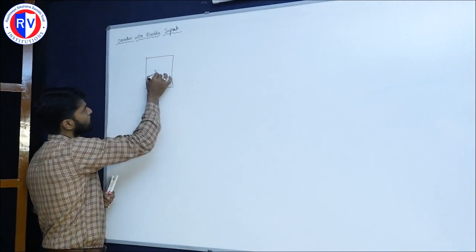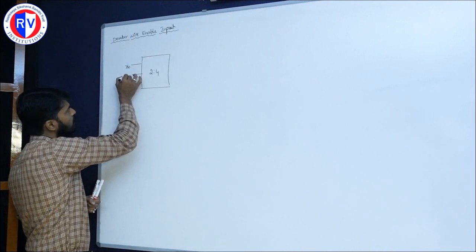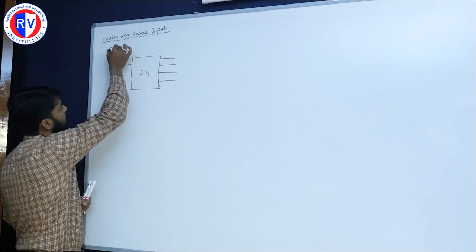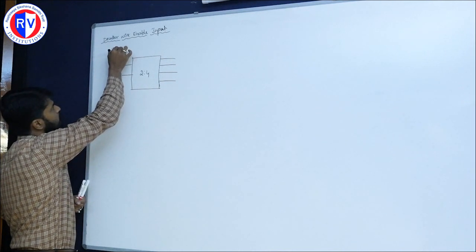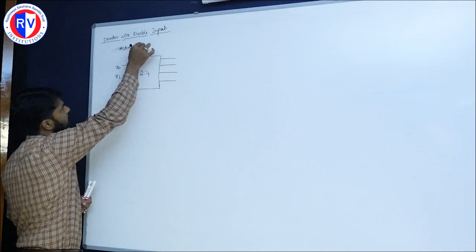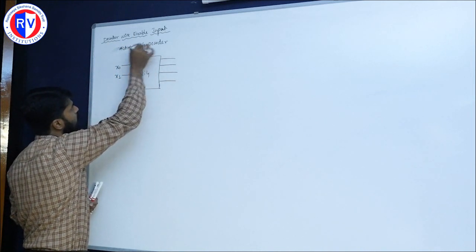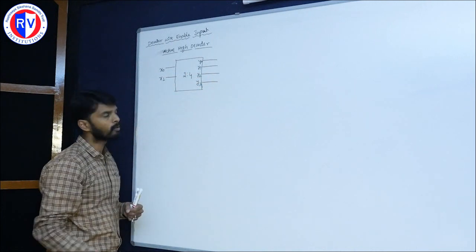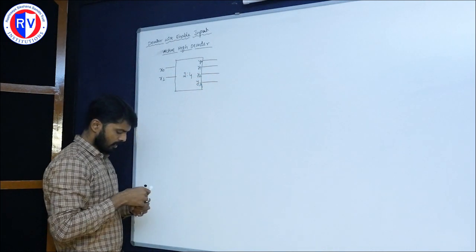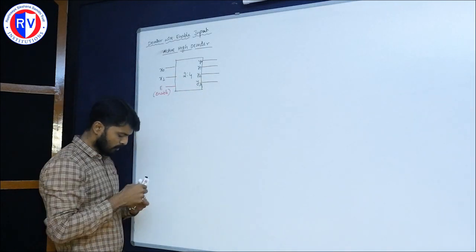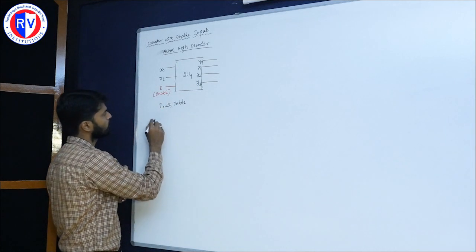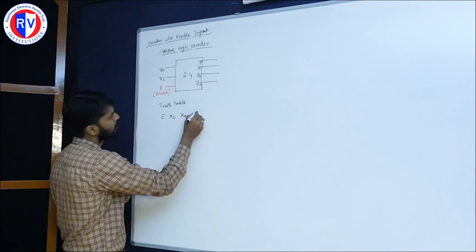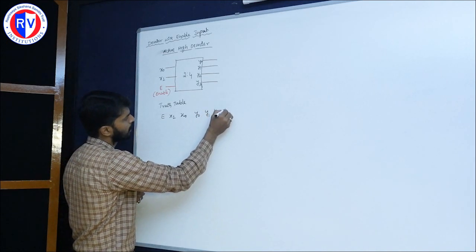This is my 2-to-4 decoder. It has two inputs: x0 and x1, and four outputs. If I consider an active high decoder, the outputs are y0, y1, y2, and y3. Additionally, I am providing one more input called enable. With respect to that, we will construct a truth table with enable, x1, x0 as inputs and y0, y1, y2, y3 as outputs.